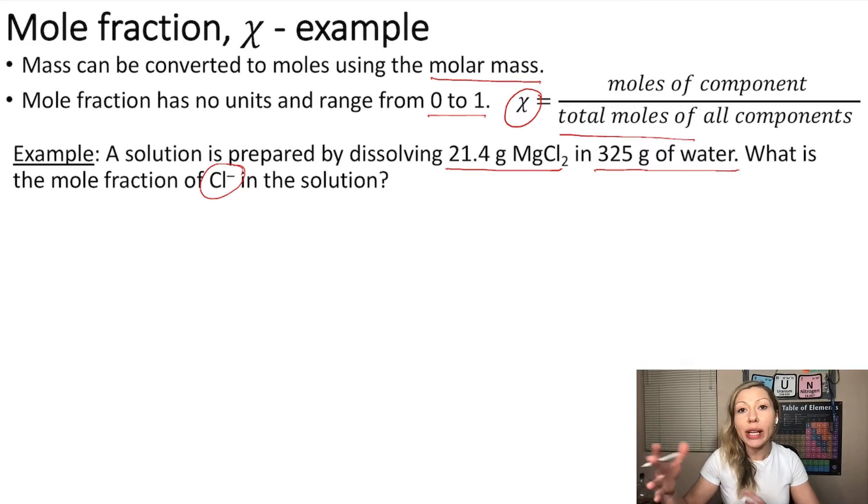The easiest way to solve this problem is to first figure out the mole fraction of magnesium chloride in the solution. So let's do that first. We start with 21.4 grams of magnesium chloride, MgCl2, and we are going to convert it into moles.